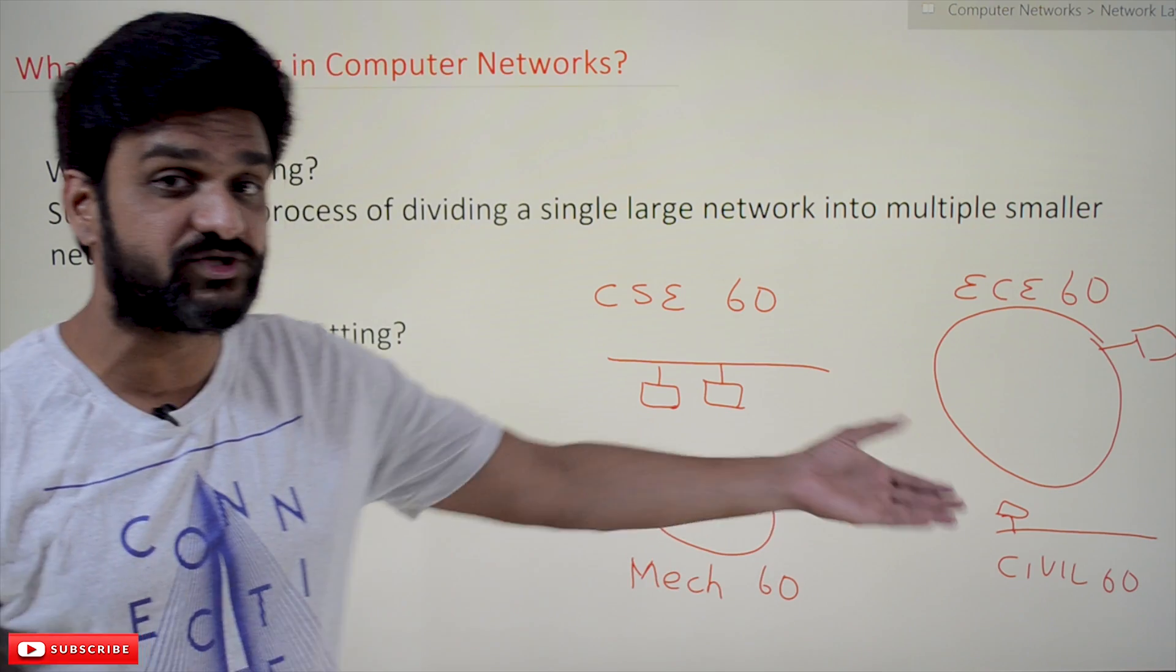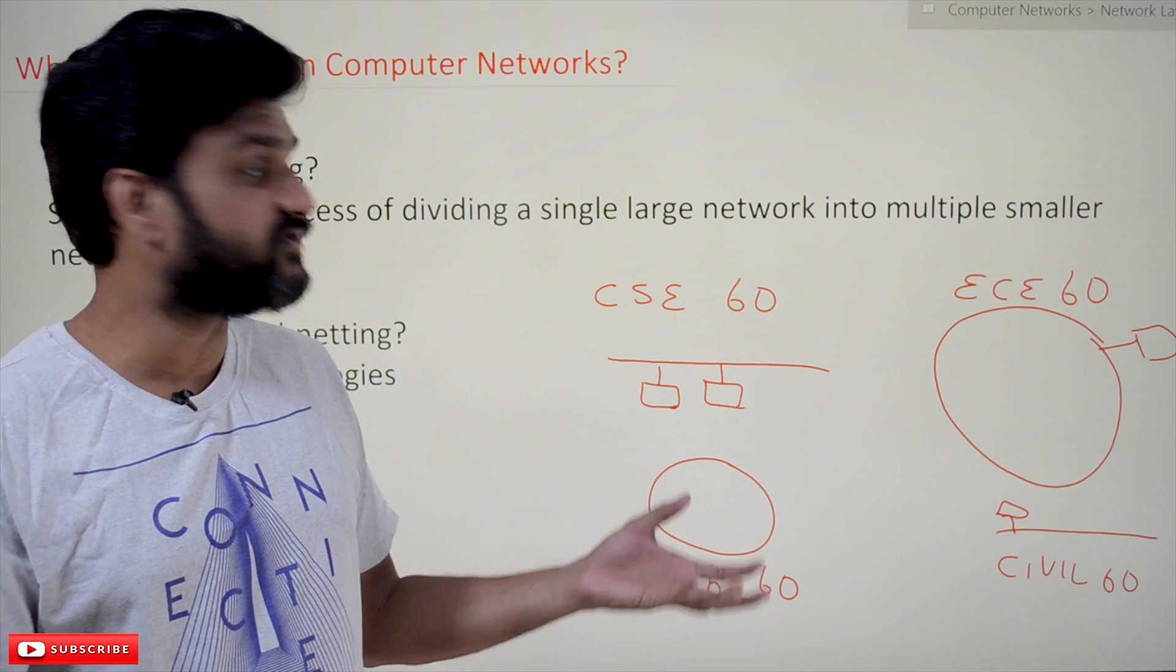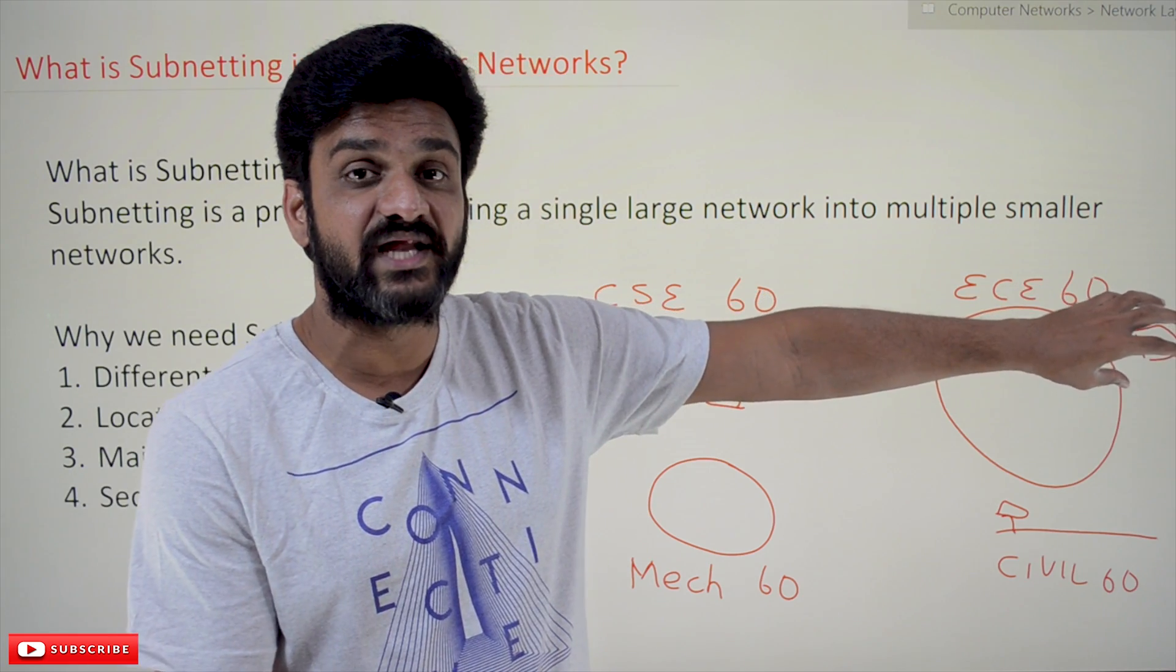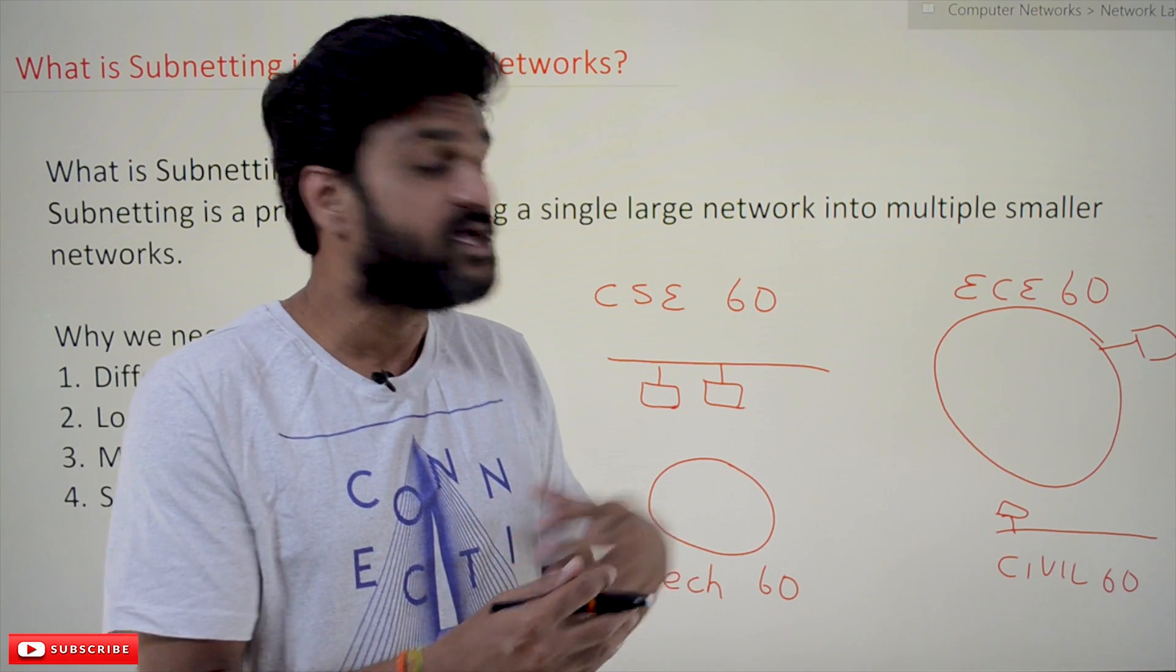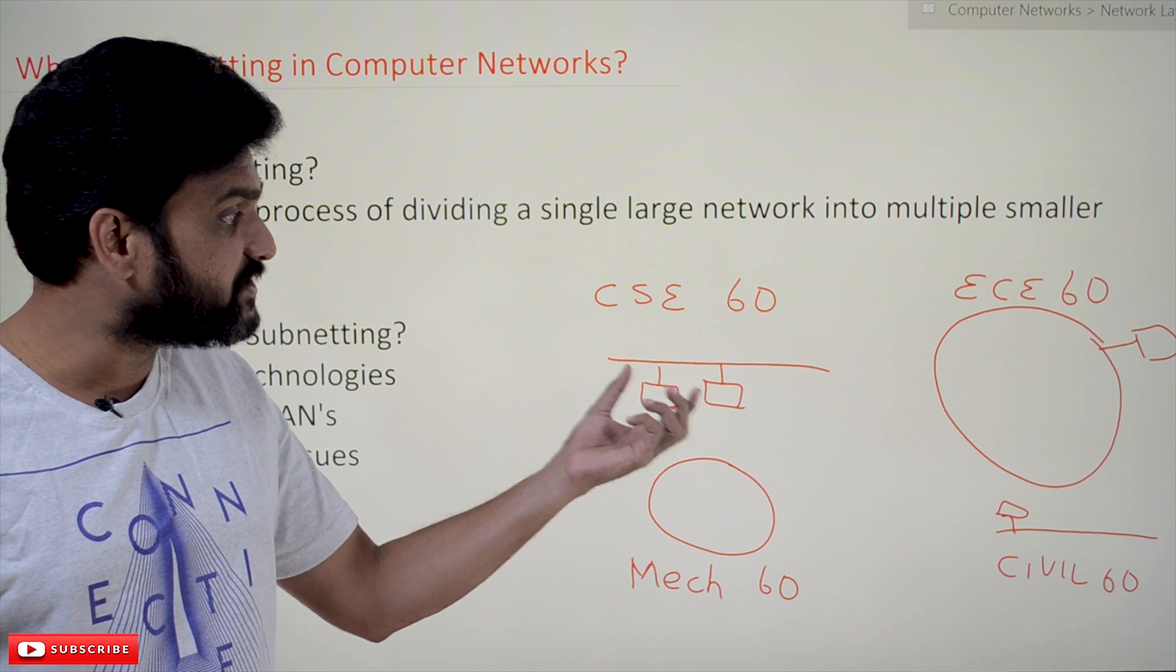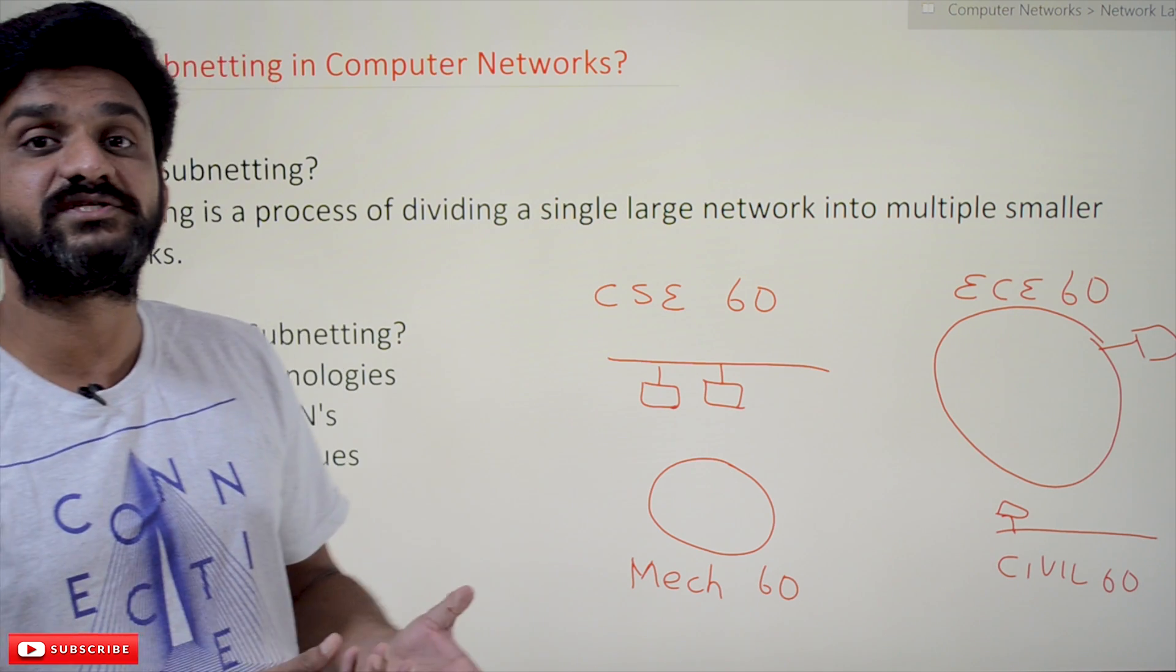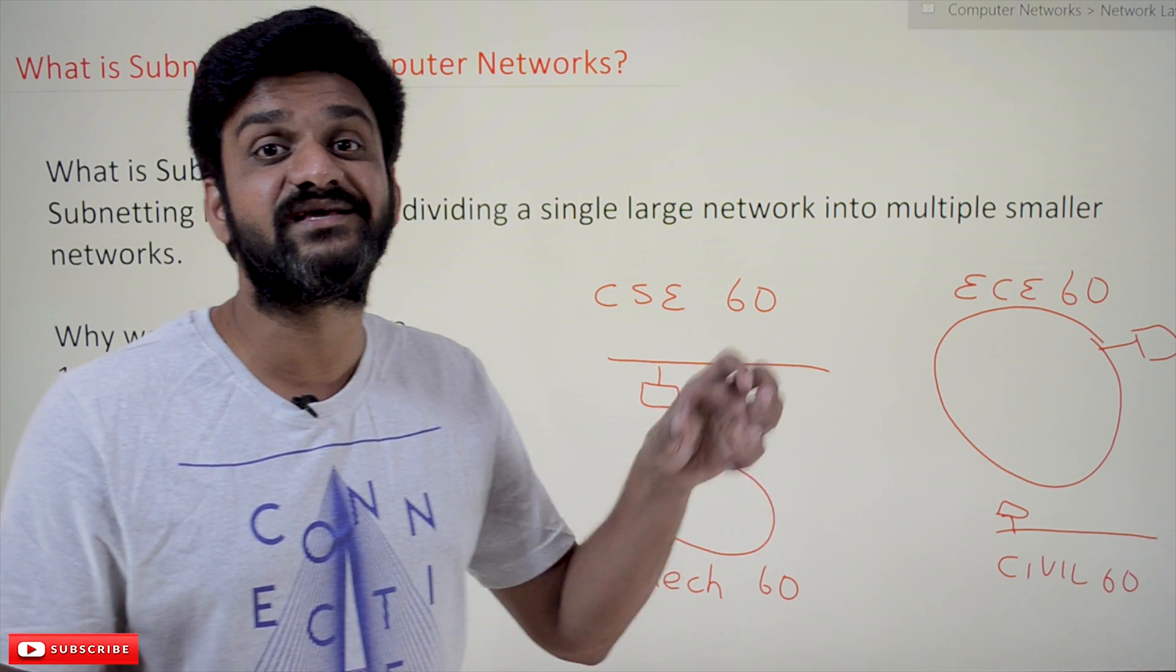In that case, different network technologies are needed because there may be requirements for some of the equipment used in the ECE lab to establish in ring topology, or for communication to happen in CSE lab, it may require Ethernet technology. So based upon those requirements, different technologies are required to be constructed, which is not possible in one single network. So there is a possibility for us to do subnetting.